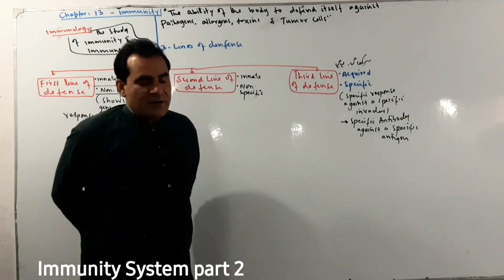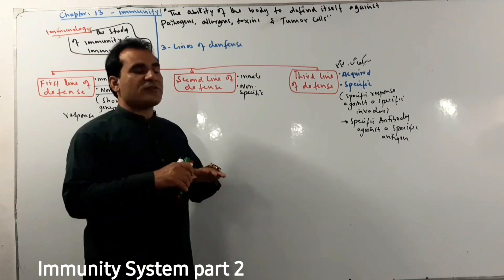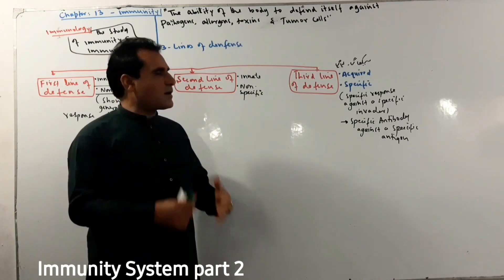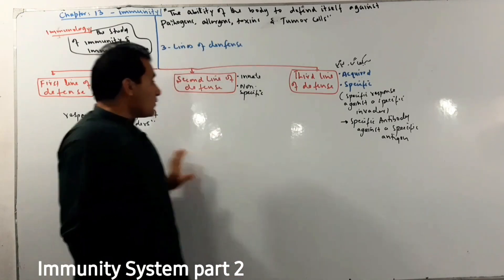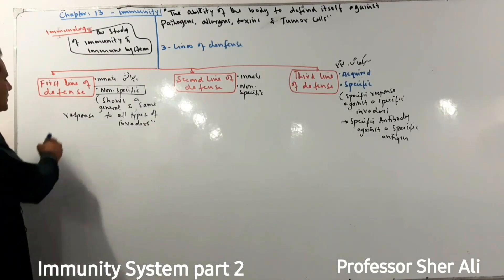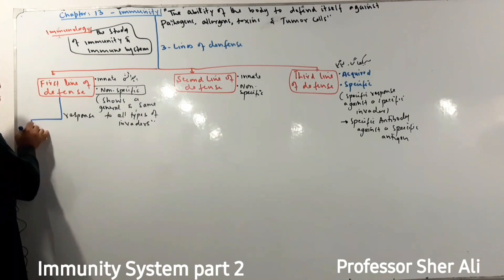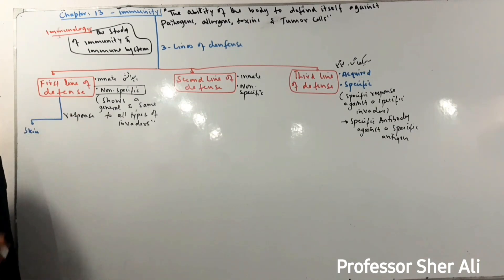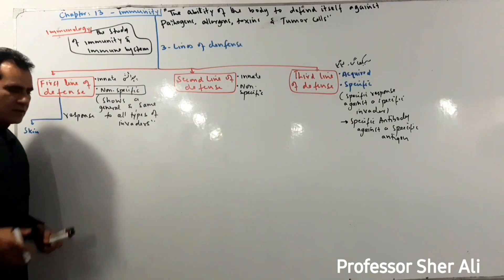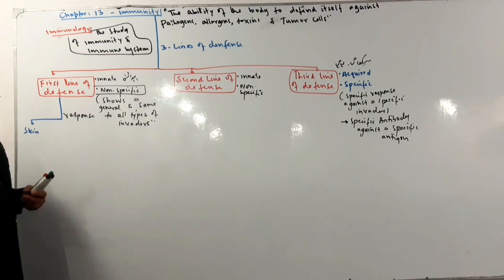The immune system involves white blood cells and is a very important component. The first line of defense is the skin, which is basically part of the integumentary system. The immune system plays a role in protecting the body.